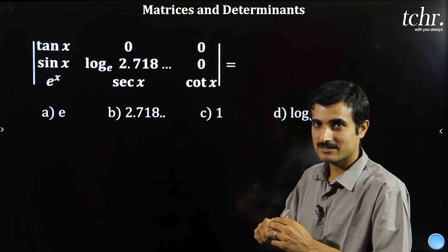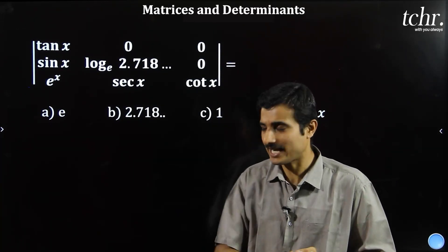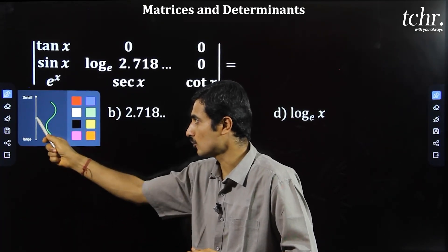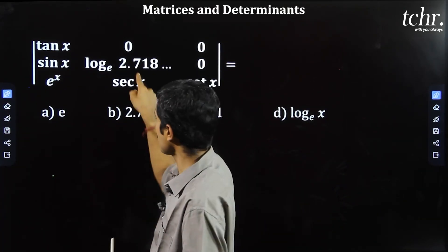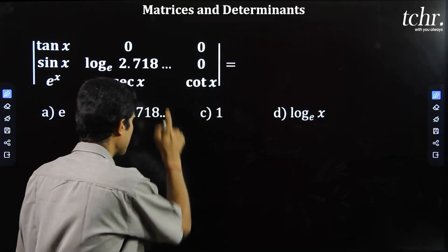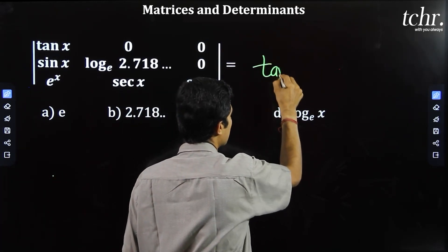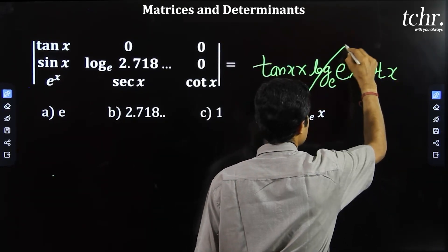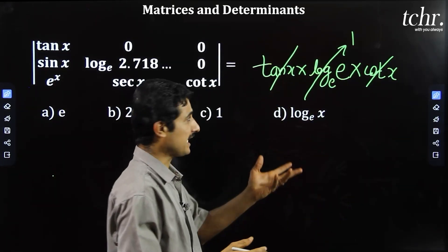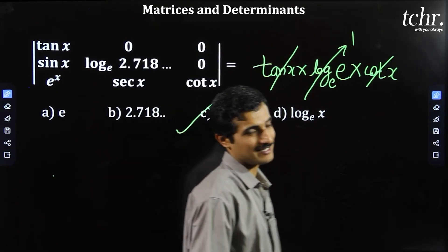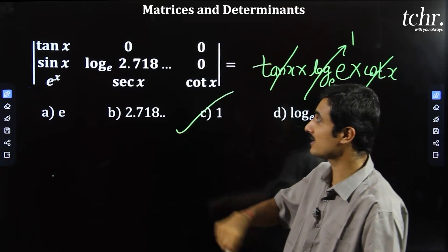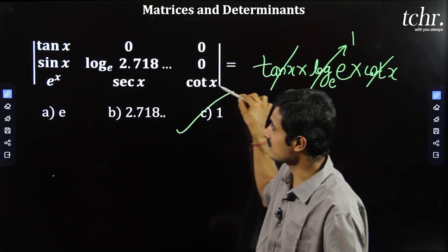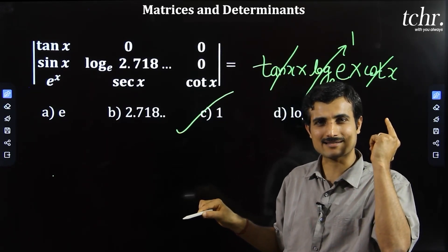Triple zero is on the top row of the matrix. So we can quickly solve the determinant by multiplying only the diagonal elements — that gives the final answer. The answer is tan x times log e (base e) times cot x. Log e base e equals 1, and tan x and cot x are reciprocals so they cancel — the answer simplifies to 1, which is option C. This rule of multiplying only diagonal elements applies only when triple zero is present in the matrix (upper triangular form).